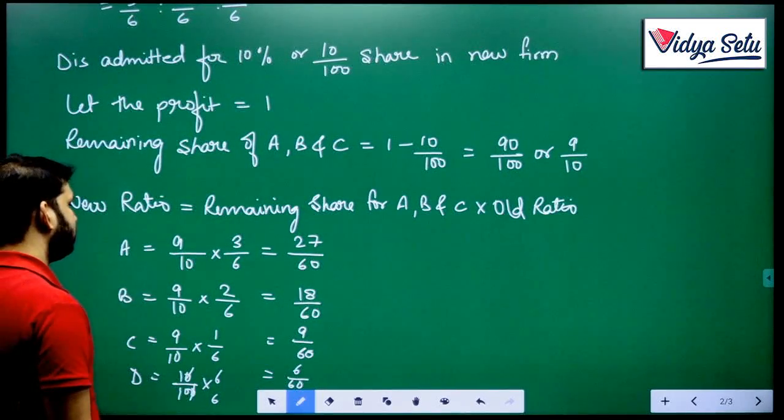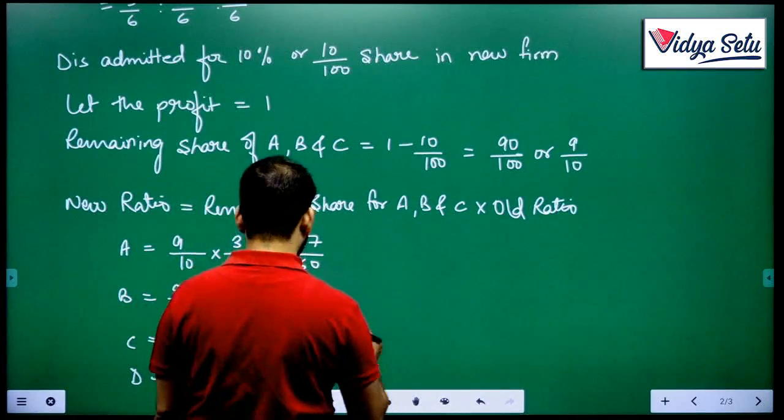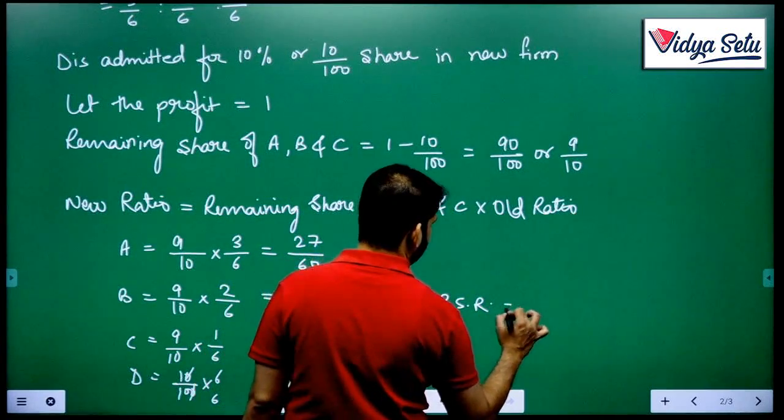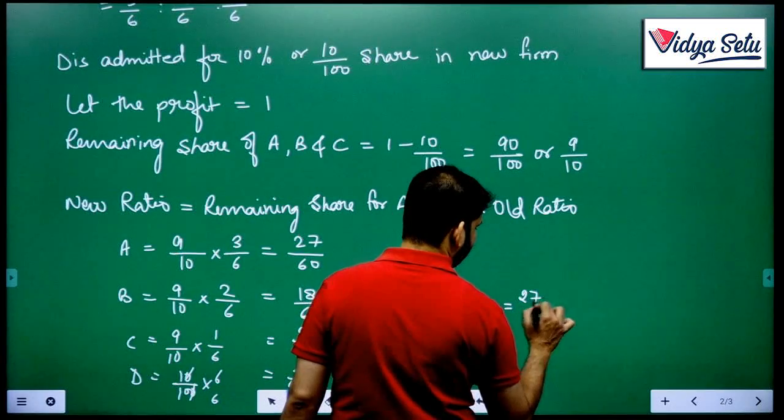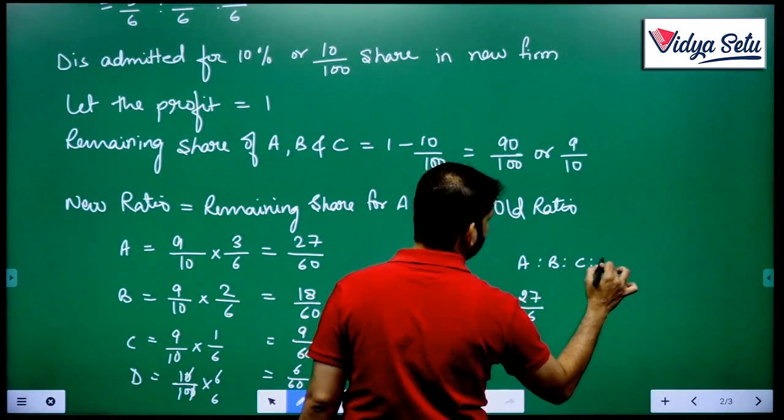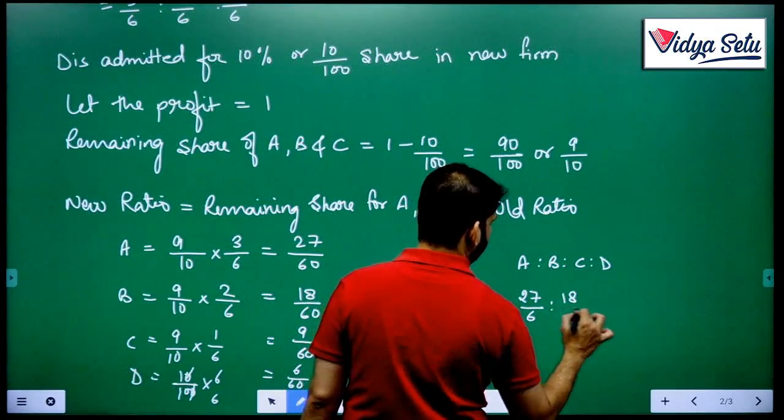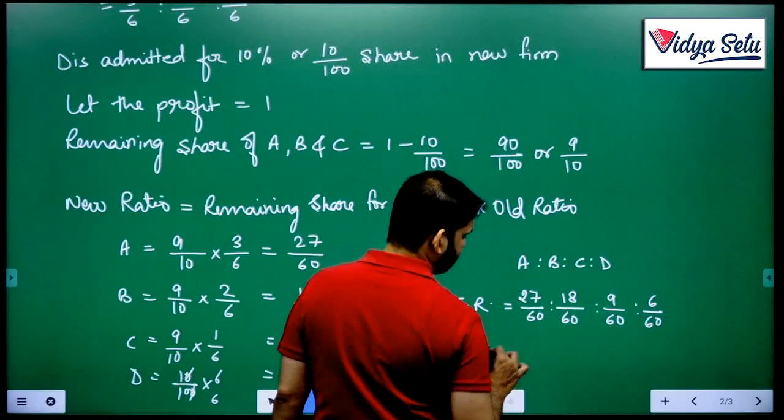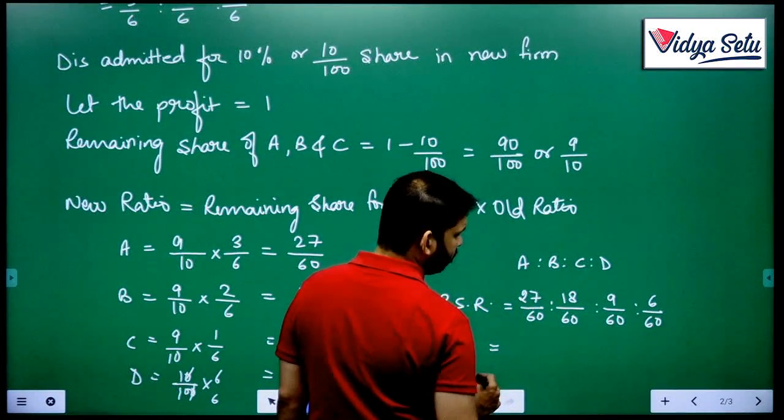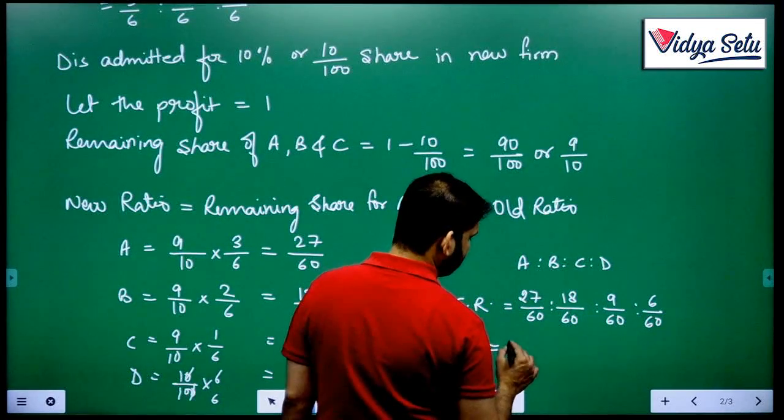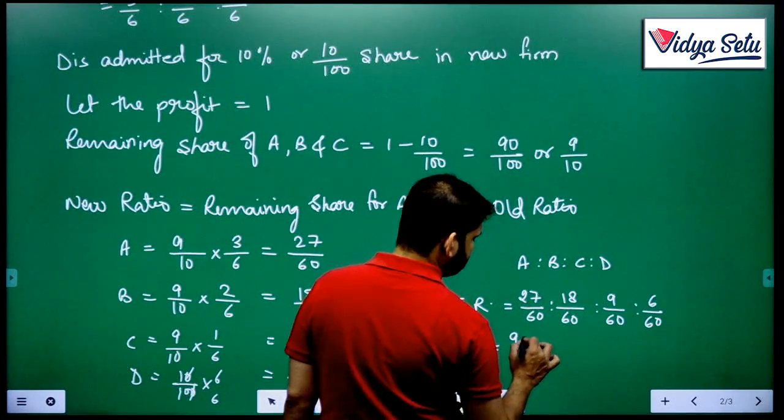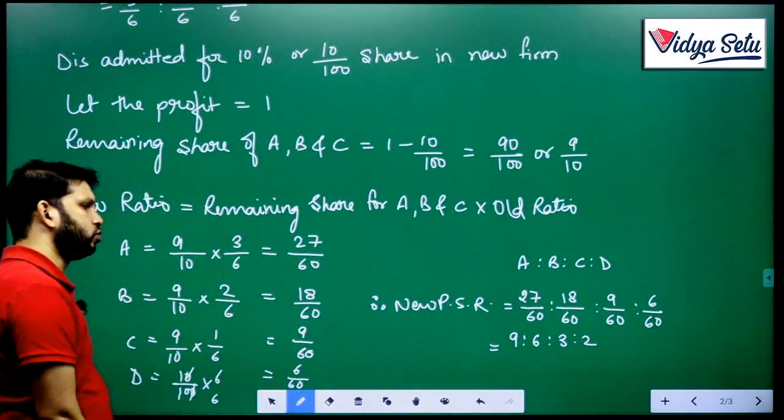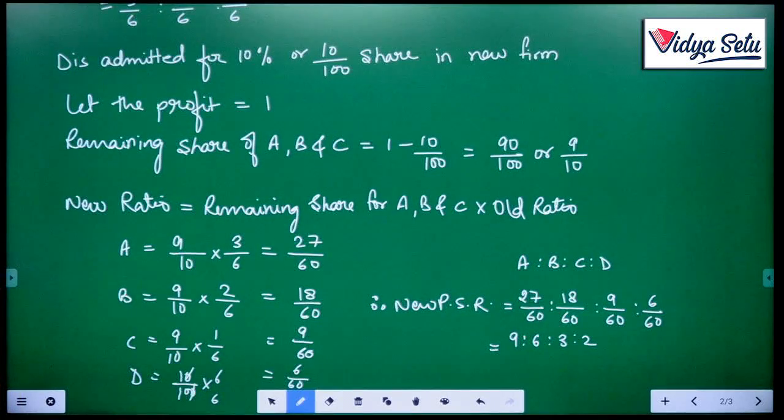27, 18, 9 and 6 - everyone can come in 3's table. Therefore, new PSR equals A is to B is to C is to D, 27/60 is to 18/60 is to 9/60 is to 6/60. 60 is gone. 9 is to 27, 6 is to 18, 3 is to 9, and 2 is to 6. The new ratio becomes 9 is to 6 is to 3 is to 2.